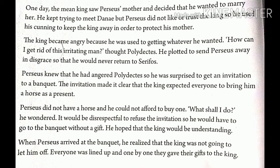Perseus knew that he had angered Polydictus, so he was surprised to get an invitation to a banquet. Banquet means a special meal for lots of people. The invitation made it clear that the king expected everyone to bring him a horse as a present. Perseus did not have a horse and could not afford to buy one. Afford means having enough money to pay for. So what shall I do? he wondered. It would be disrespectful to refuse the invitation, so he would have to go to the banquet without a gift. He hoped that the king would be understanding. When Perseus arrived at the banquet, he realized the king was not going to let him off. Everyone was lined up and one by one they gave their gifts to the king.